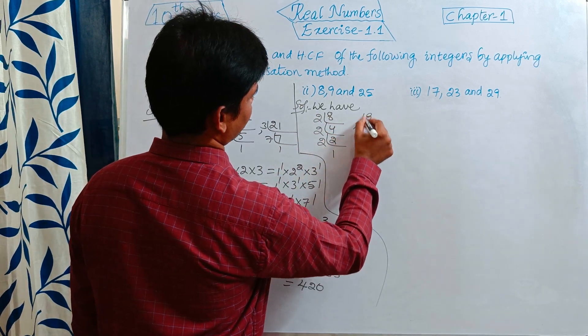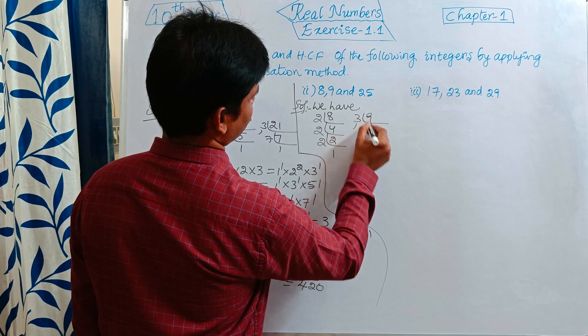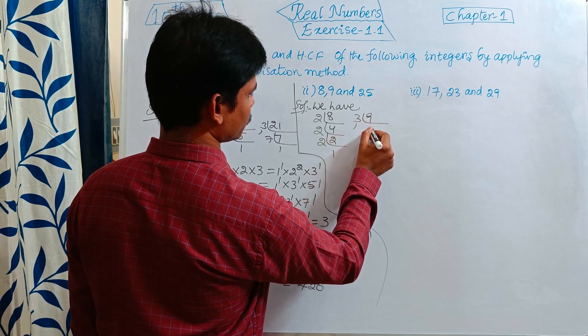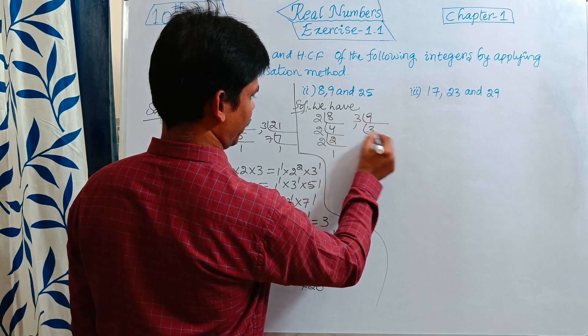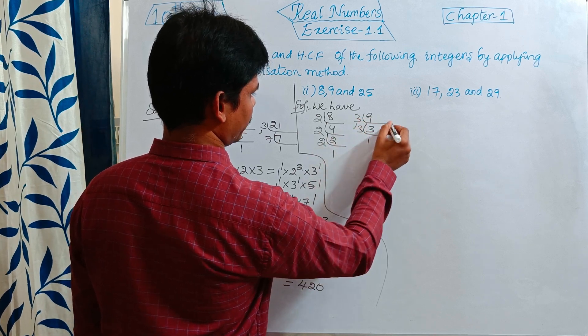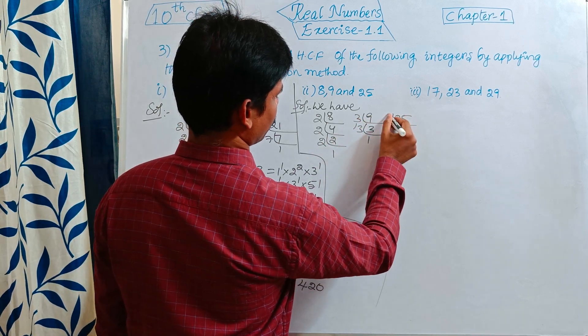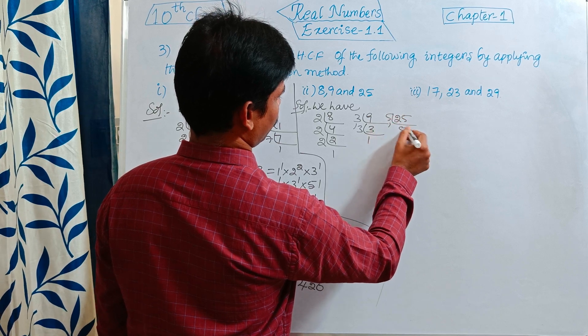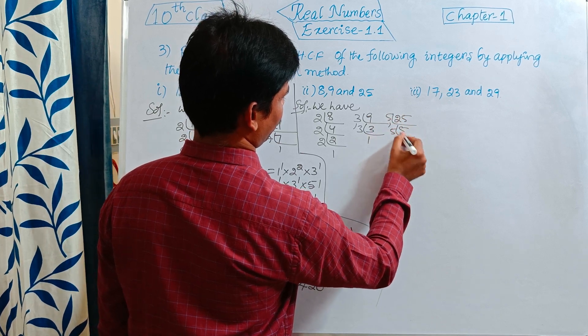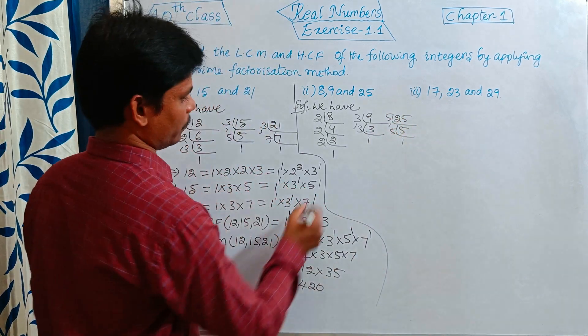Next, 9: 3 × 3 is 9, 3 × 1 is 3. Next, 25: 5 × 5 is 25, 5 × 1 is 5.